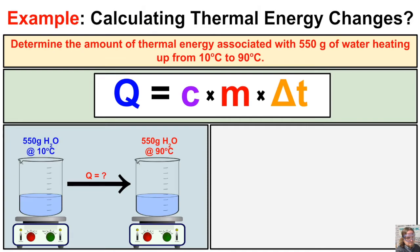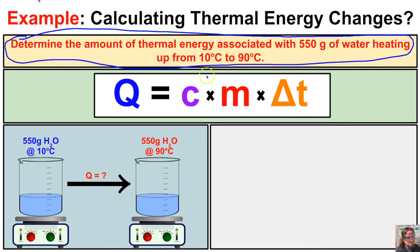Let's take a look at this problem: determine the amount of thermal energy associated with 500 grams of water heating up from 10 degrees Celsius to 90 degrees Celsius. We have a beaker of water — 550 grams — with a starting temperature of 10 degrees. We're going to put this beaker on a hot plate and heat it up so the water ends up at 90 degrees Celsius.